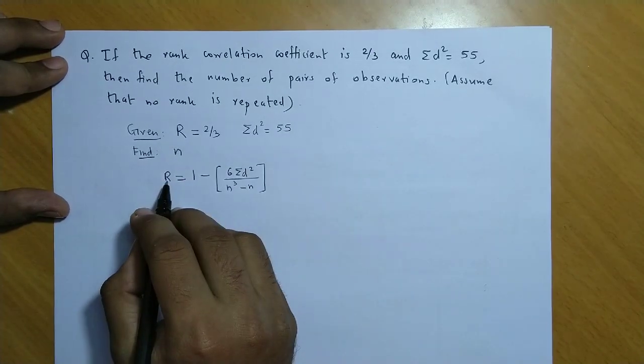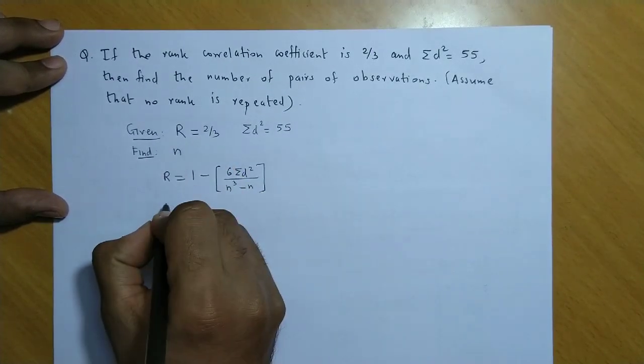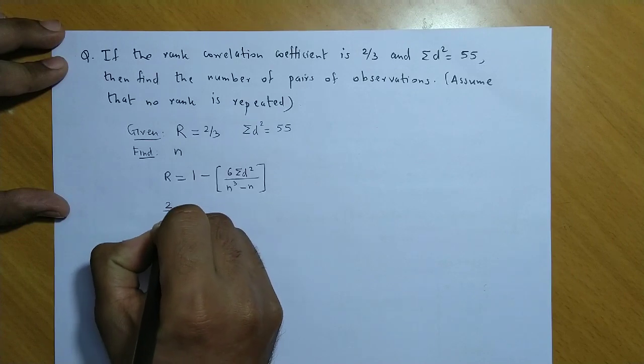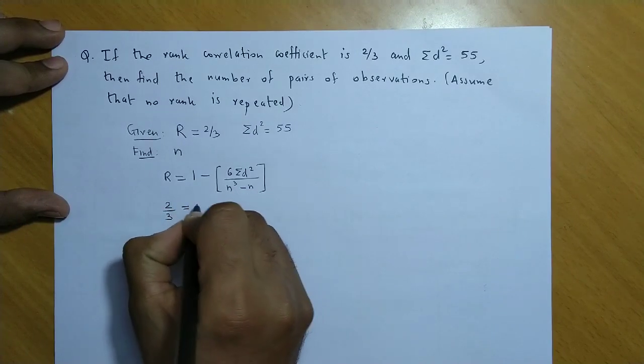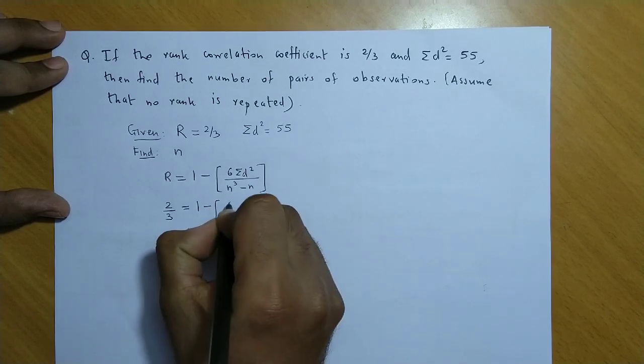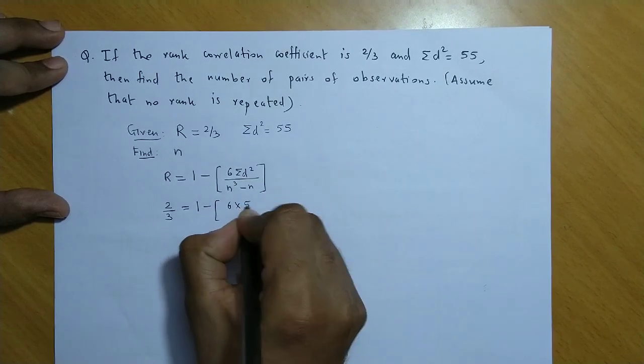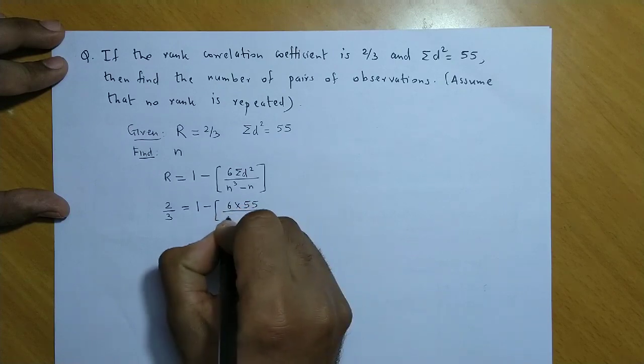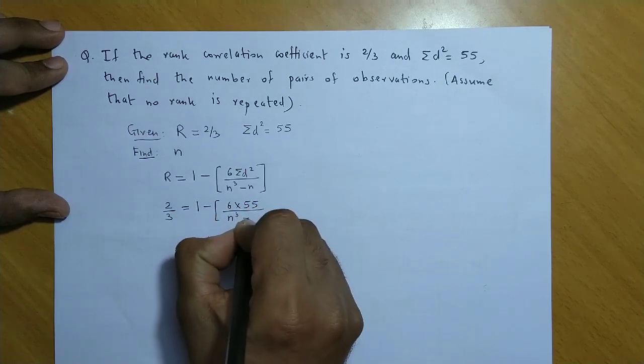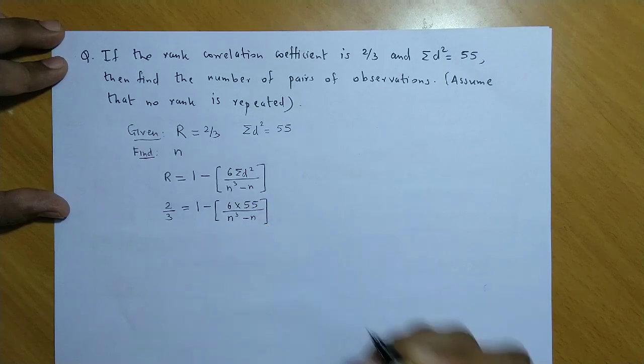R ki value hai 2 by 3. So, left hand side mein hum value likh lete hai: 2/3 equal to 1 minus 6 times summation d square. Aur is ki value hai 55 divided by n cube minus n.